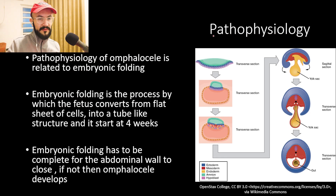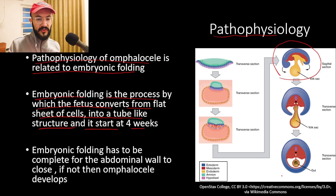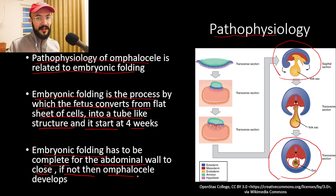The pathophysiology of omphalocele is related to embryonic folding — the process by which the fetus converts from a flat sheet of cells into a tube-like structure, starting at four weeks. When this process is completed, the visceral organs will be covered by the abdominal wall. If embryonic folding is incomplete, omphalocele or gastroschisis will develop.